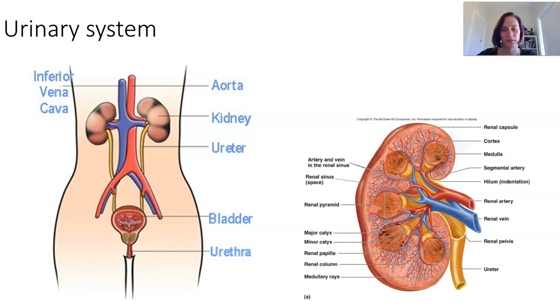The kidneys remove waste products from chemical reactions, urea, excess amounts of salt and water in the blood. Each kidney receives its own blood supply from the branch of the aorta called the renal artery, which is this red one here, and the renal vein, this blue one, carries the filtered blood back out. The filtered waste product is excreted from the kidney as urine coming through here through the ureter, and it drains to the bladder and then drains out via the urethra.